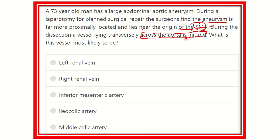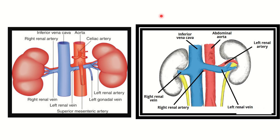We know the abdominal aorta lies on the left side, so this vein will extend from right to left. Let's look at a picture — one picture is enough to describe this condition. Here we can see the abdominal aorta.